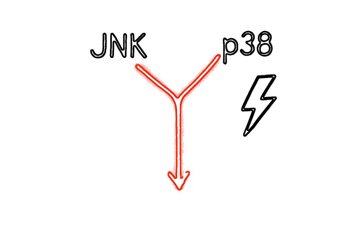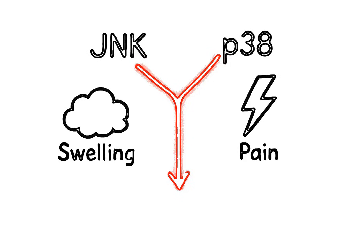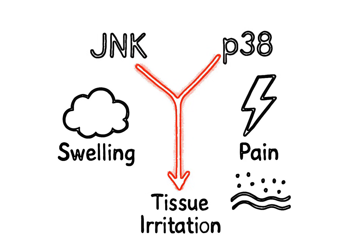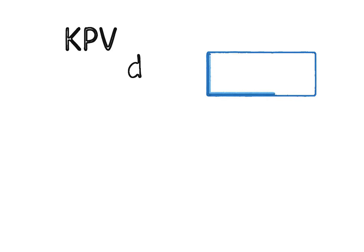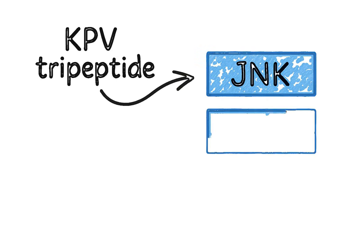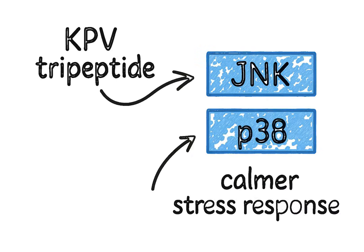And the action doesn't stop there. Your body has stress pathways that can also increase inflammation. Two important ones are JNK and P38. When these are active, you feel more swelling, pain, and tissue irritation. KPV blocks these pathways, helping to calm the body's overall stress response.